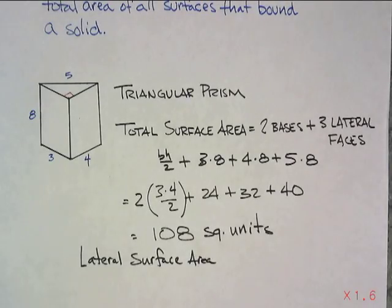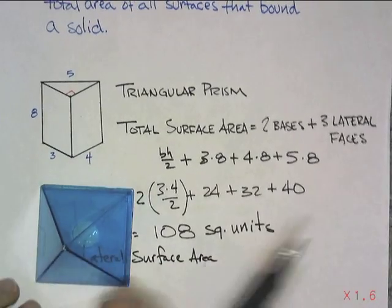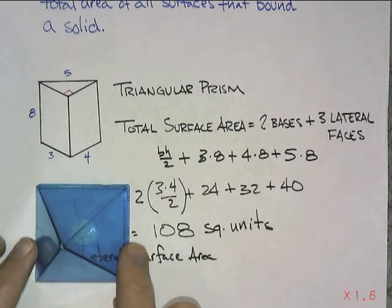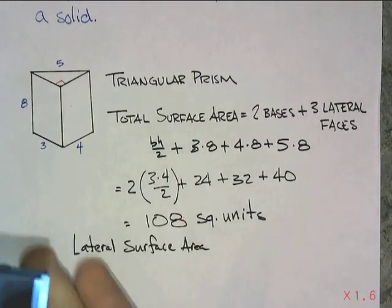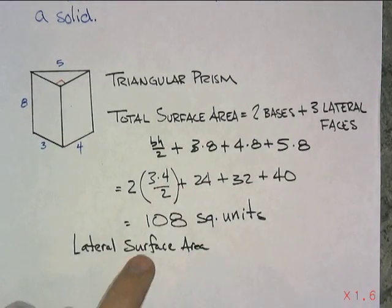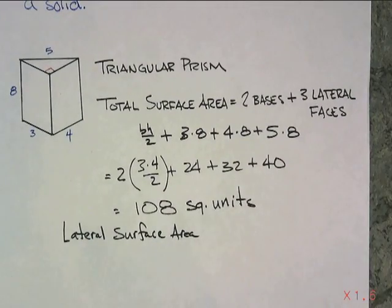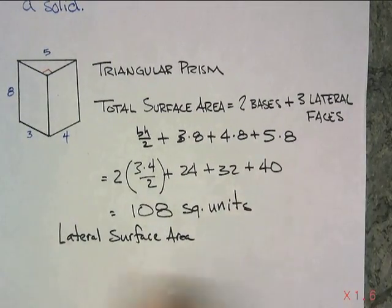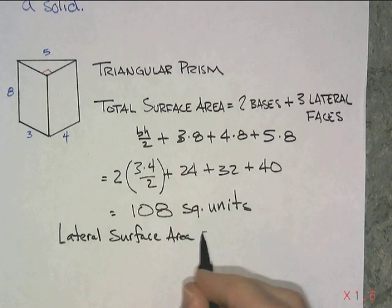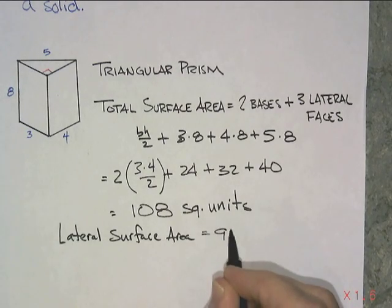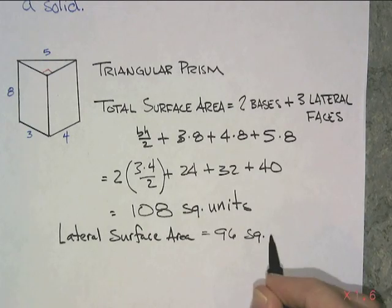If you had a square pyramid, if you had lateral surface area, it would only be the triangles. You do not include the bases when you're talking about the lateral surface area. So the lateral, which comes to the side or from the side. So the lateral surface area would just be those three numbers and that would be 96 square units.